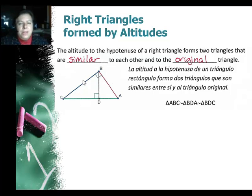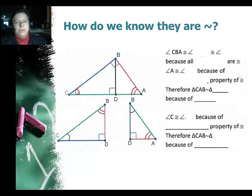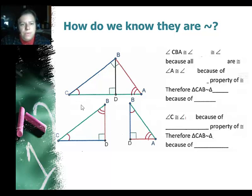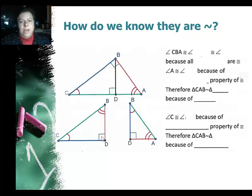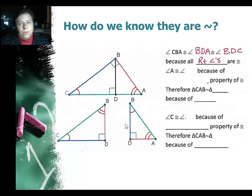Now let's take a look at why that is so — how do we know that they're similar? I went ahead and marked the congruences. First, angle C is congruent to angle C, and angle A is congruent to angle A. Starting with the easiest angles: the right angles. There's a right angle in the original big triangle, a right angle at angle D on the smaller triangle on the right, and a right angle on the left. All three of those angles must be congruent because all right angles are congruent.